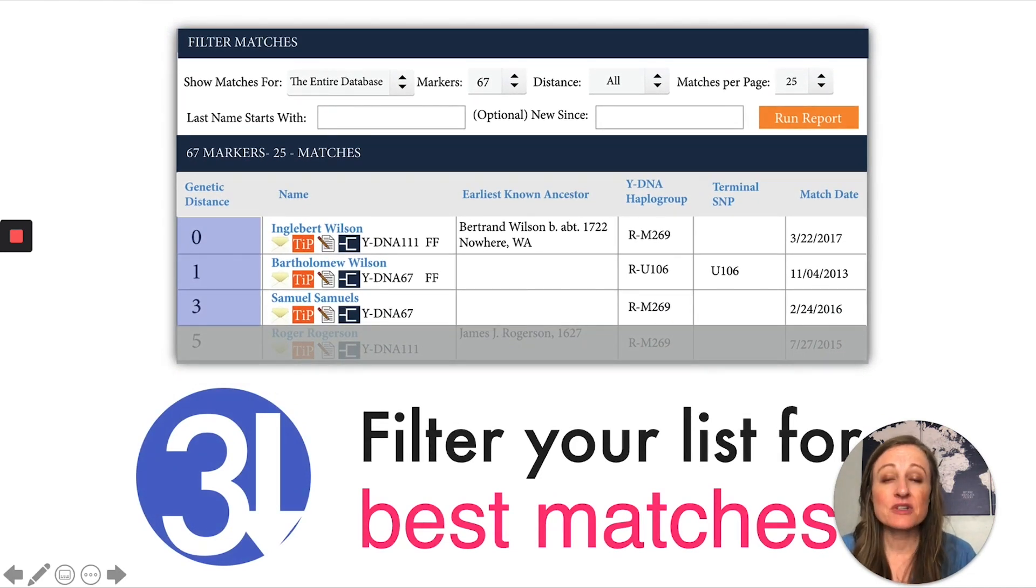This column, genetic distance, is the most important column in your DNA test results. You want this number to be three or fewer if you've tested at 37 or 67 DNA markers. If you've tested at 111, you could probably go up to five differences. But really, this just ensures that you could find a recent common ancestor with your DNA match.